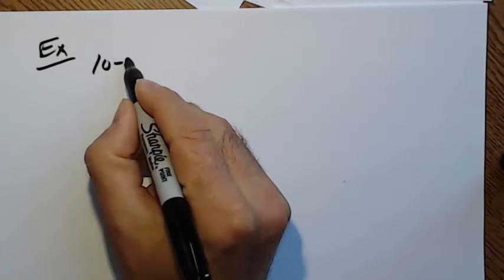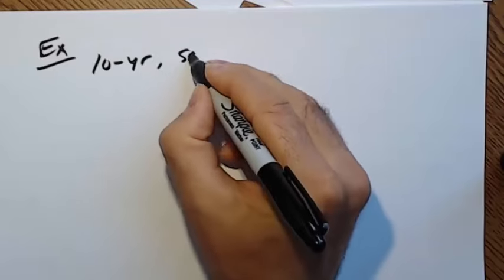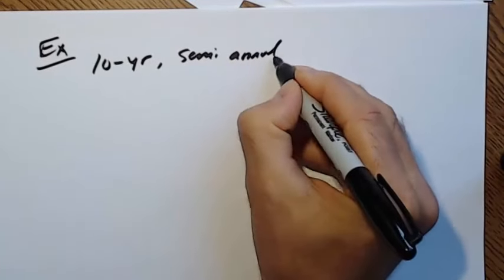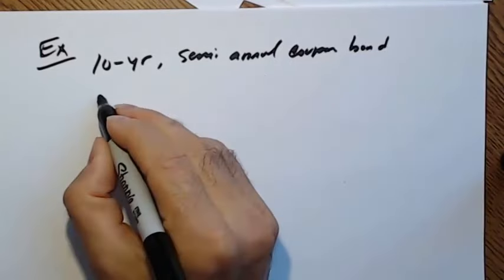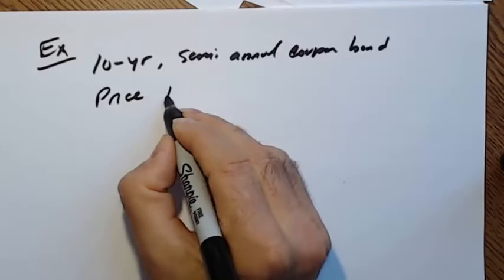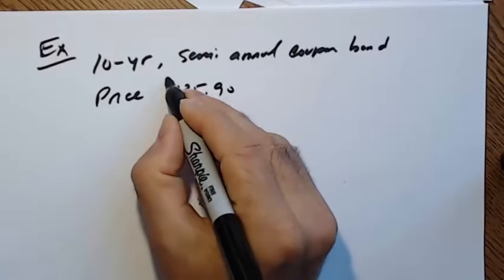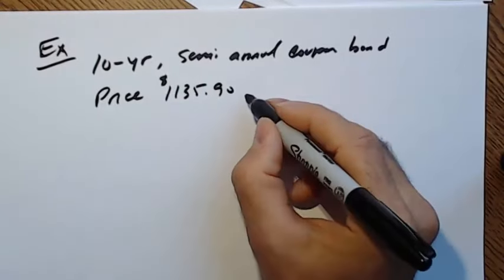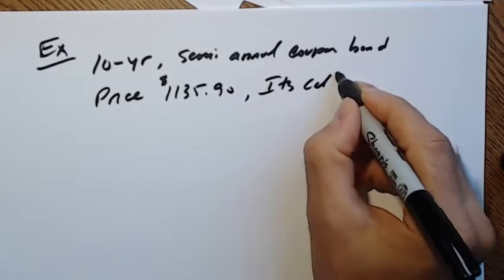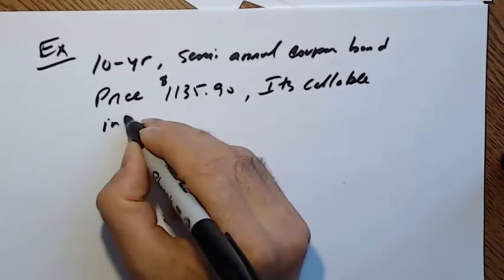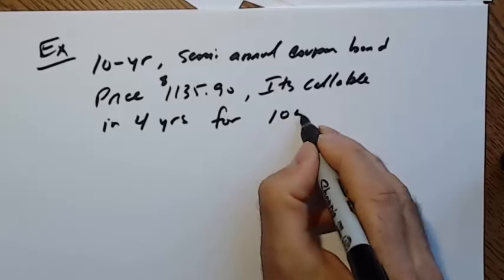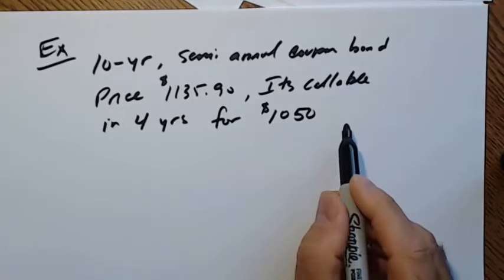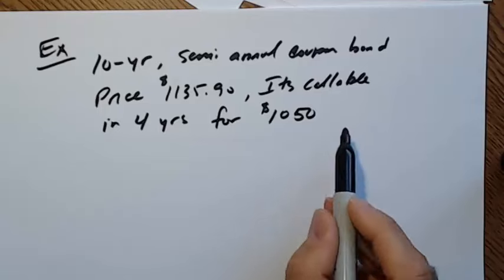Here's an example: a 10-year semi-annual coupon bond is priced at $1,135.90 and trading at a premium. It's callable in four years at a price of $1,050.